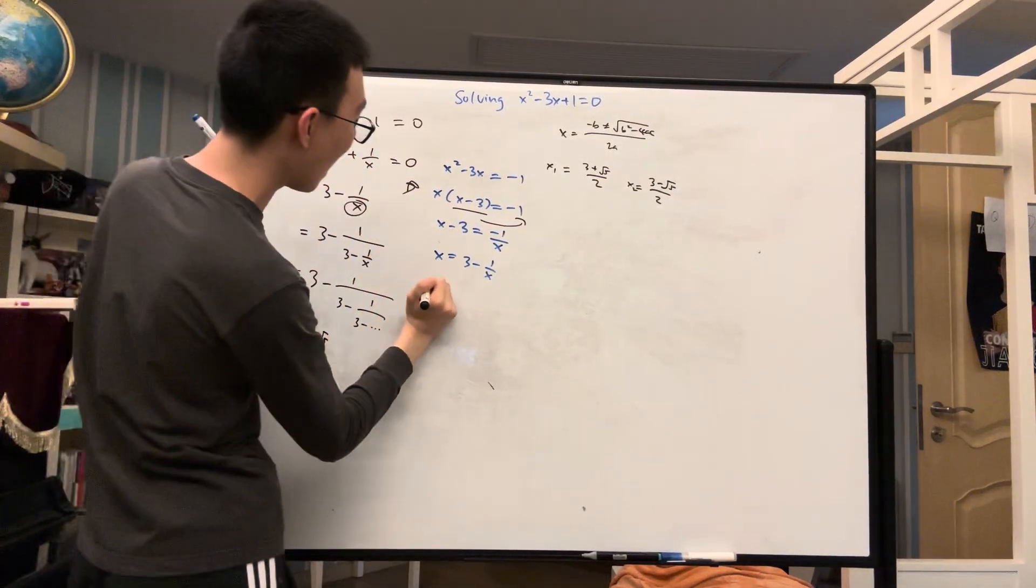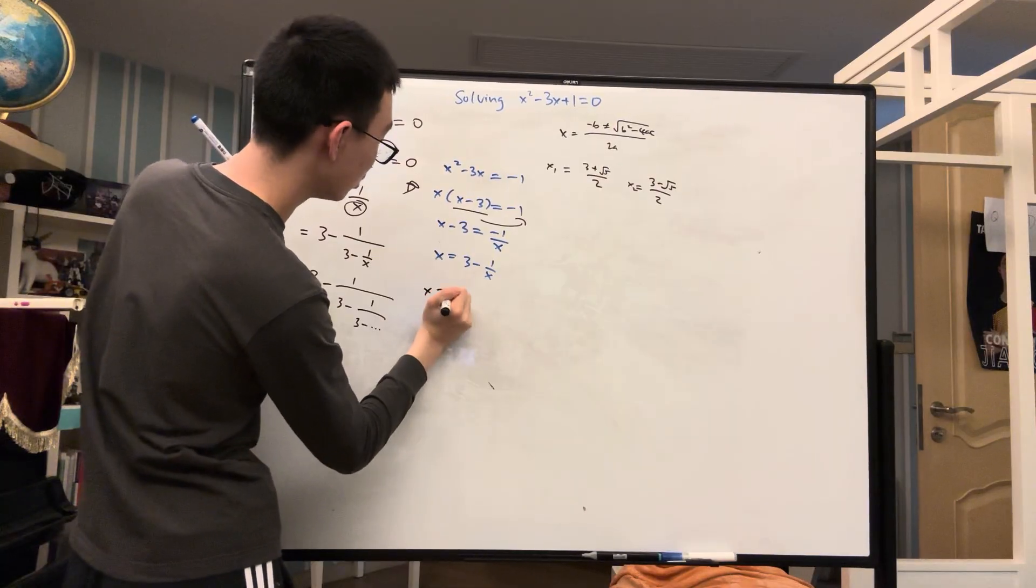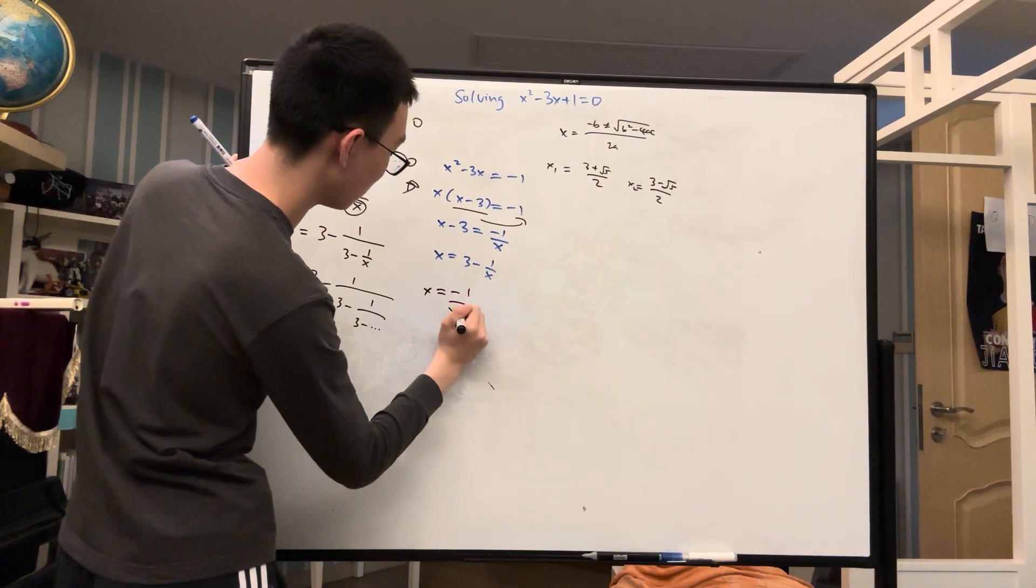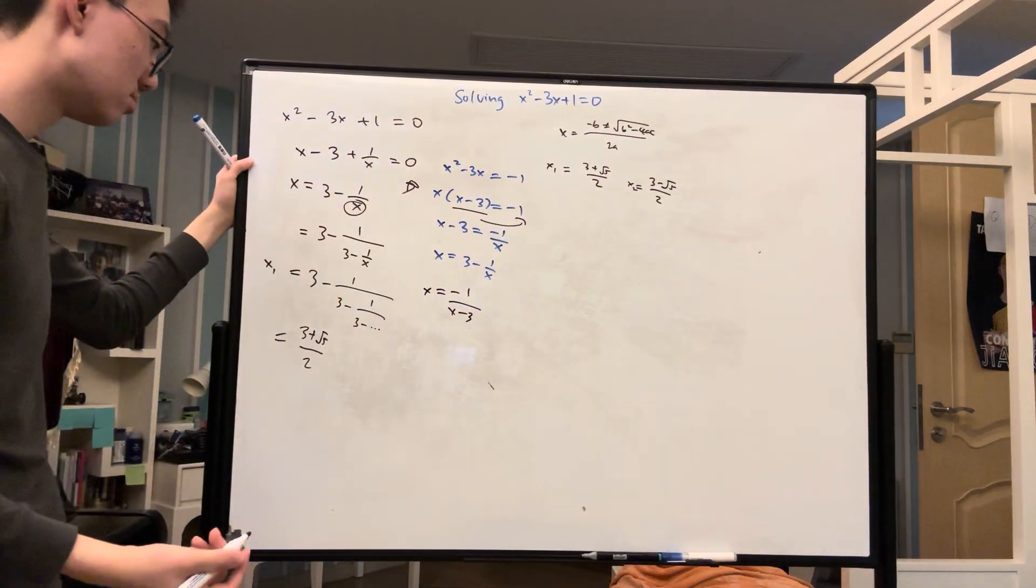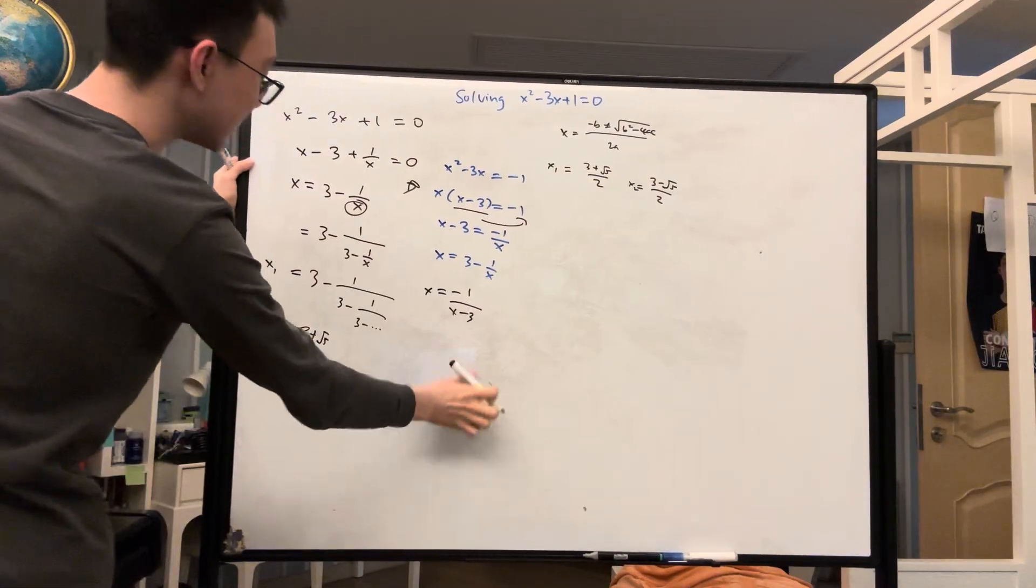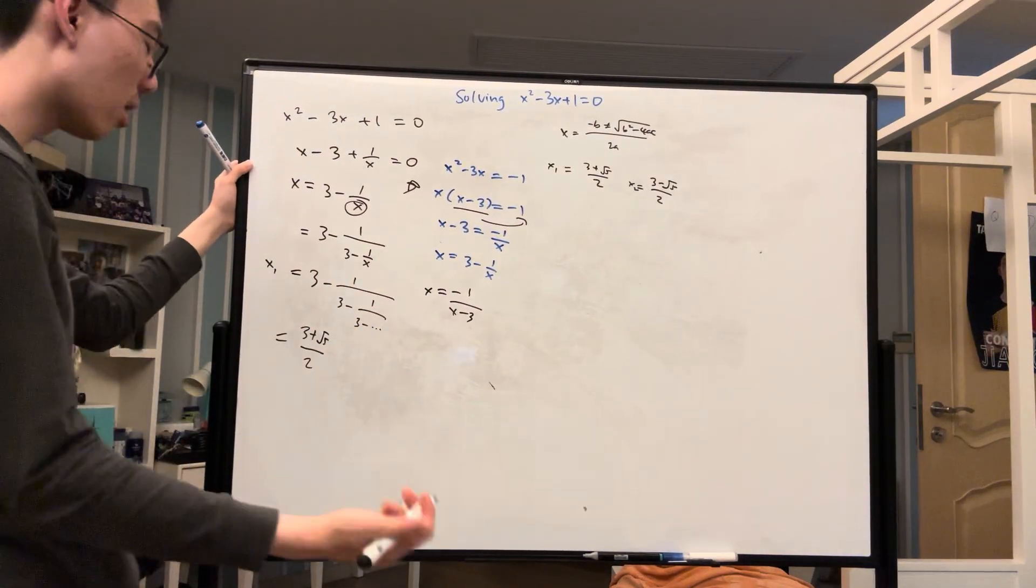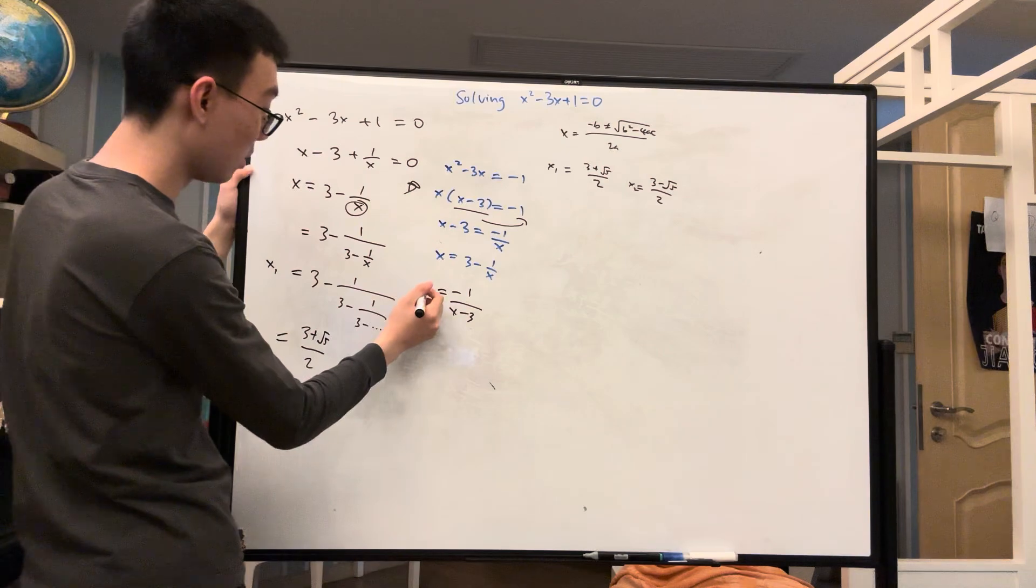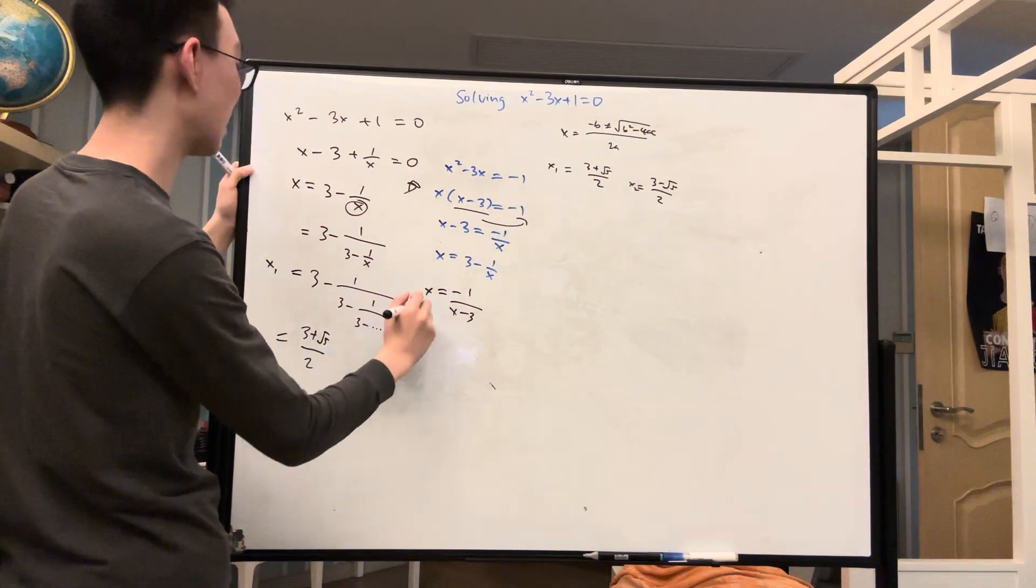Then we would get x is equal to negative 1 over x minus 3. And then we could perform the exact same thing here, where we would substitute x again for negative 1 over x minus 3.